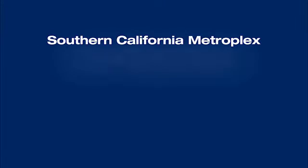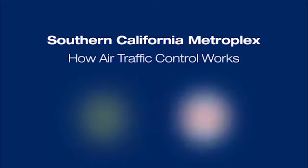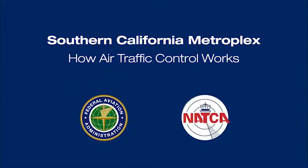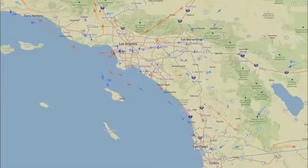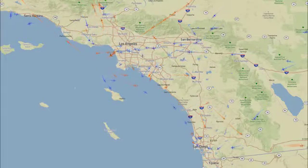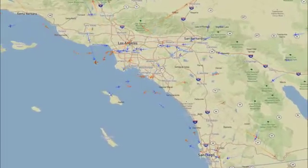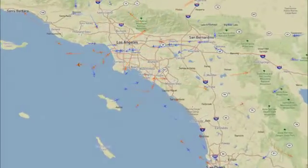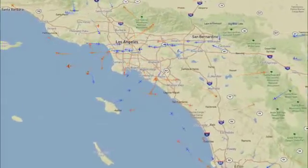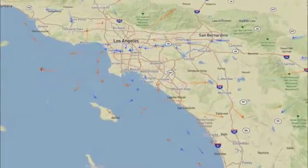Welcome to the Southern California Metroplex Community Engagement Video Series. This presentation provides a basic explanation of how the Federal Aviation Administration's air traffic control system works. The most important responsibilities of an air traffic controller are ensuring planes are safely separated from each other while maintaining the most efficient flow of air traffic.